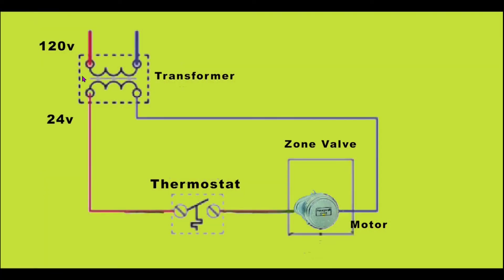So what we have here is a power source of 120 volts coming in to a transformer. Once it comes into the transformer, we have 24 volts going through the line that are controlled by a thermostat.